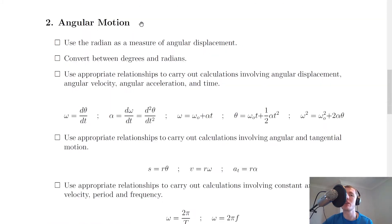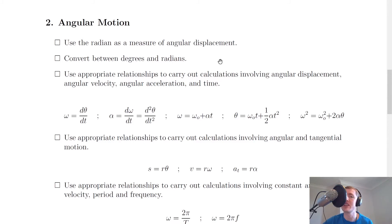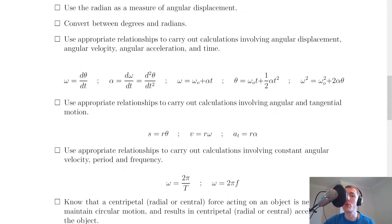Moving on to section two for angular motion, you need to be able to use the radian as a measure of angular displacement — all that's saying is you need to remember that angular displacement has units of radians. You also need to be able to convert between degrees and radians; a useful way to remember this is that 2 pi radians equals 360 degrees, or that pi radians is 180 degrees. Use appropriate relationships to carry out calculations involving angular displacement, angular velocity, angular acceleration and time. We have the angular forms of the linear equations: omega equals d theta by dt, meaning angular velocity is equal to the rate of change of angular displacement.